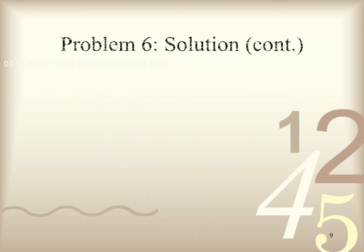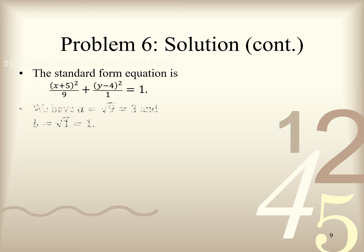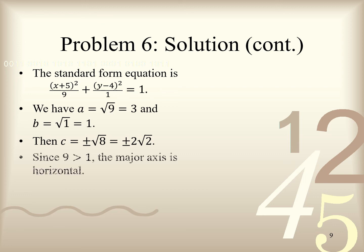We continue to solve problem 6. From 6.4, we now have the standard form equation of the given ellipse. Let's analyze this equation to help us determine the graph of this ellipse in the XY plane. Note that the length A of the semi-major axis is 3, and the length B of the semi-minor axis is 1. Then the constant C is calculated to be plus or minus 2 times the square root of 2. In the standard form equation, since the denominator under the X term, 9, is greater than the denominator under the Y term, 1, it follows that the major axis is horizontal. So this ellipse is horizontally oriented.